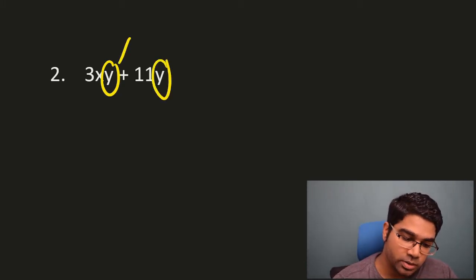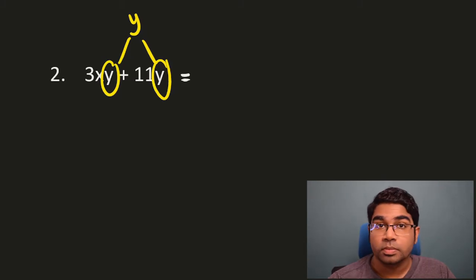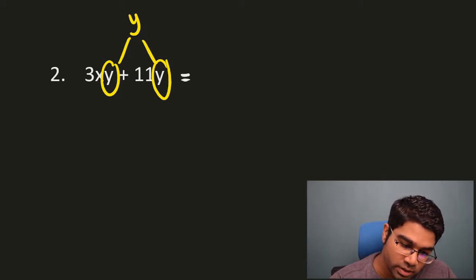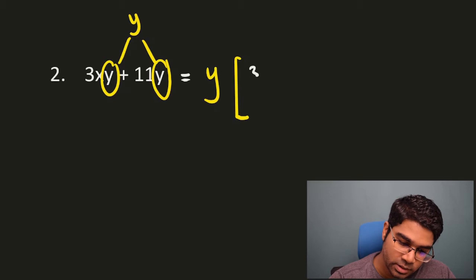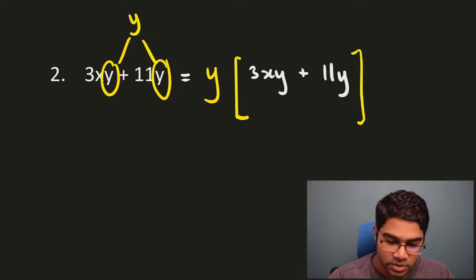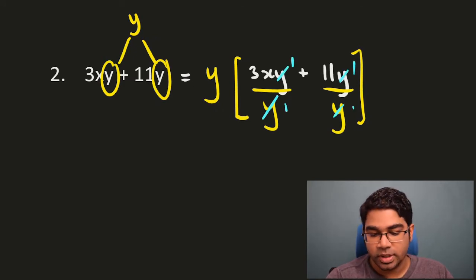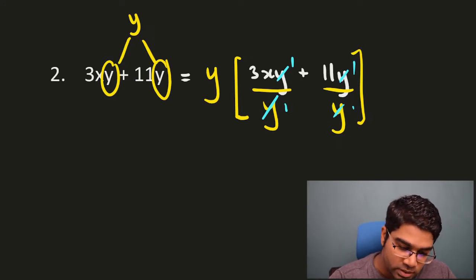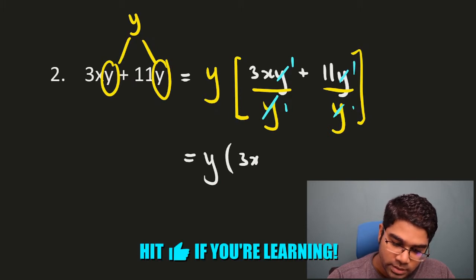We are going to take out y from the expression. First, we write what we have taken out outside the bracket, then write a big bracket and copy back exactly the original expression: 3xy plus 11y. Now we are going to divide by whatever we have taken out, which is y. Y divided by y gives 1, and what we are left with is y on the outside and 3x plus 11 inside the bracket.